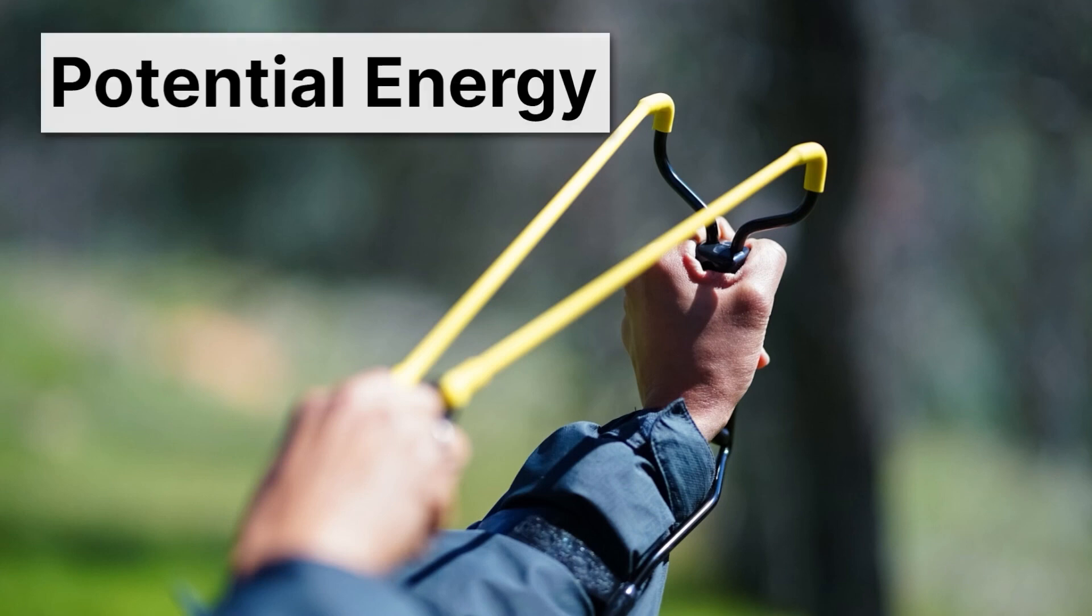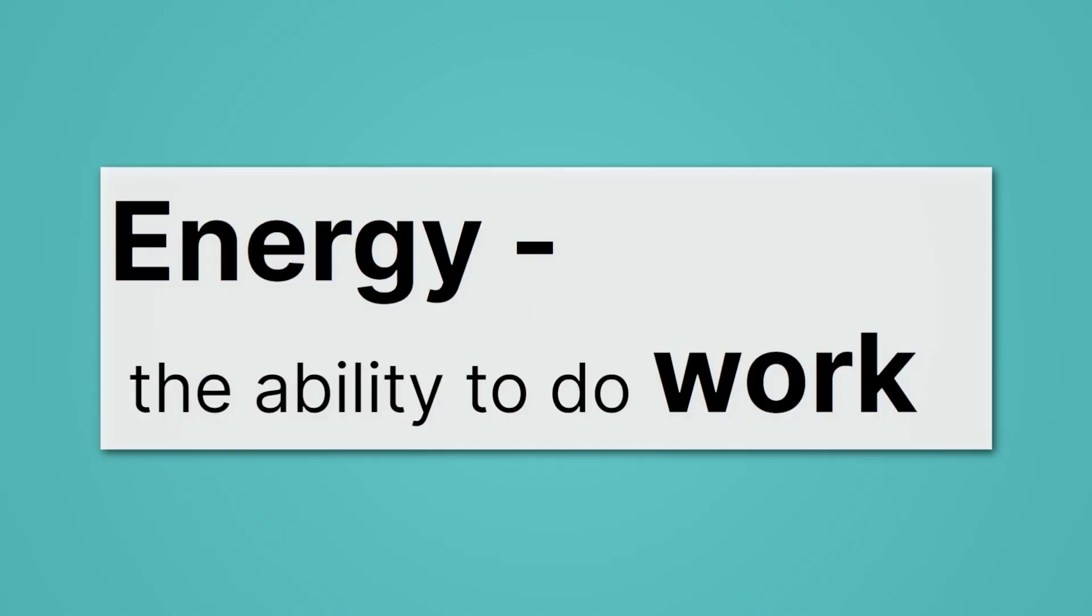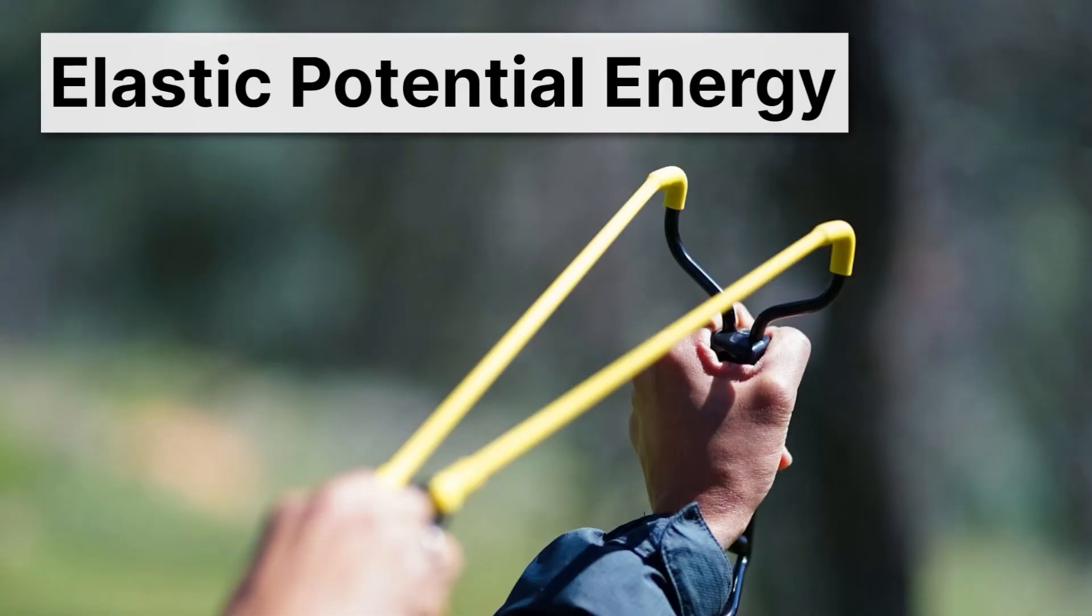Let me just remind us of what energy is in general. Remember that energy is the ability to do work. And potential energy is associated with arrangement. That is how something is positioned. So when we look at our example of elastic potential energy, the reason there's high potential energy is because we've pulled back that band. We've changed its arrangement and given it potential energy.